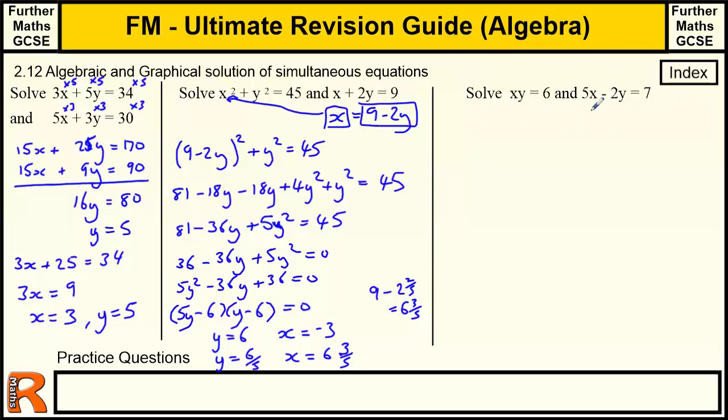Okay. And now we've got this equation. That's sort of slightly unusual. We've got XY equals 6 and then this linear equation here. And there's two options here. I could try to make X equal to 6 over Y and then substitute that value of X into here. Or I could make this so that 2Y equals 5X minus 7. So Y is going to be 5X minus 7 over 2. This is slightly preferable because it's over 2 rather than over a letter. So I'm going to use this one and then replace this Y in this expression with this.